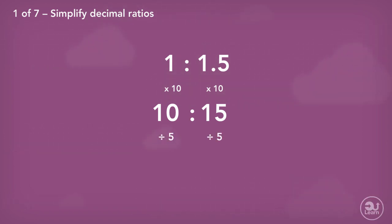A common factor of 10 and 15 is 5. Dividing both values gives us the final answer of 2 to 3. This ratio is a simplification of 1 to 1.5.